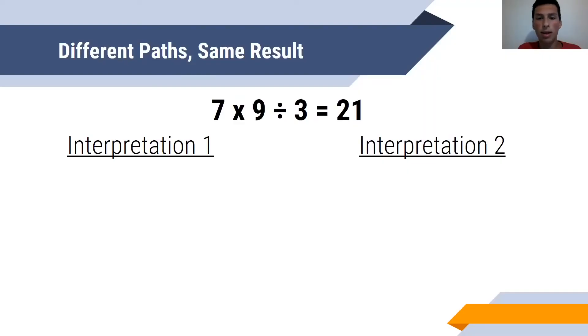Even though ambiguity exists a lot of the time when there's no parentheses, in this one there's actually no ambiguity. You use a different path, there's two interpretations, but you get to the same result.